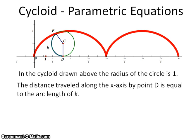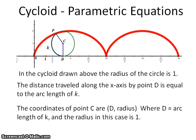So to get an equation for the cycloid, we need to figure out what the coordinates of point P are. The coordinates of point C are D comma radius. Well, the radius in this case is 1.